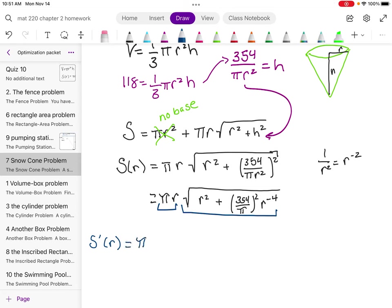pi times the square root term r squared plus this whole 354 over pi squared times r to the negative 4. All right. Then that gets added to pi r because that doesn't change.